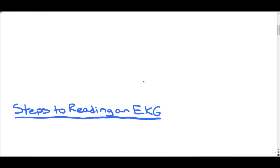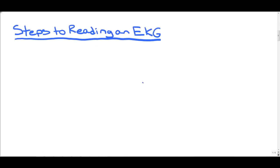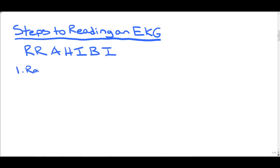Before you can really understand how to read an EKG, you need to have a system that you go through step-by-step to make sure you don't miss anything. The system I use is called RAHIBI — an acronym to make sure I go through everything on an EKG. The first thing I look for is Rate, second is Rhythm, third is Axis — Left Axis Deviation, Right Axis Deviation, or Normal Axis.